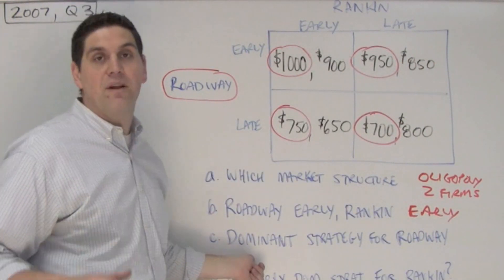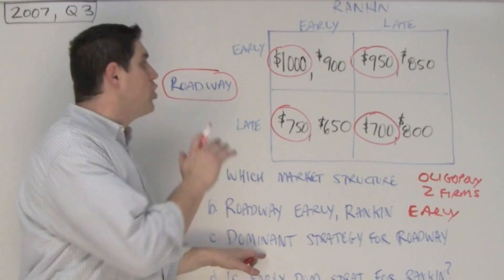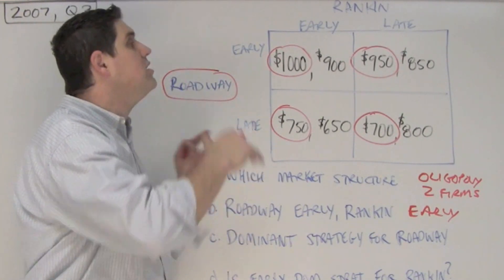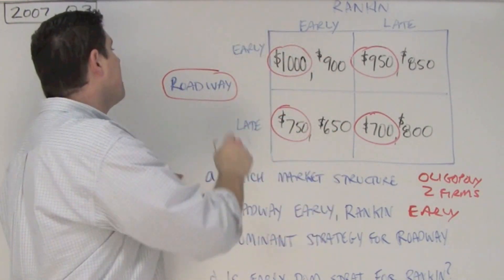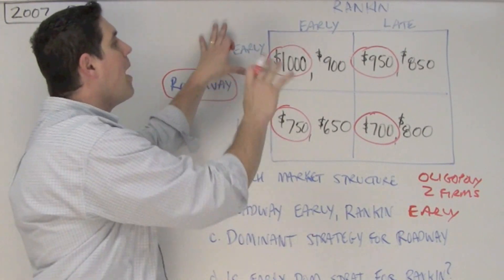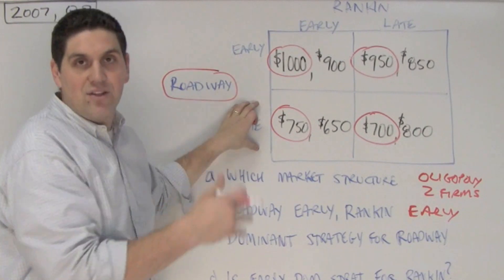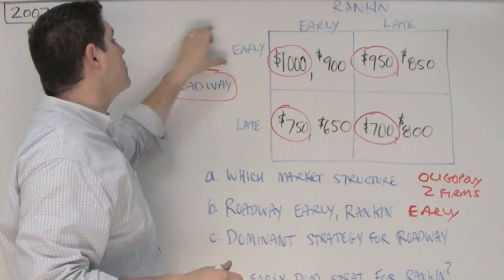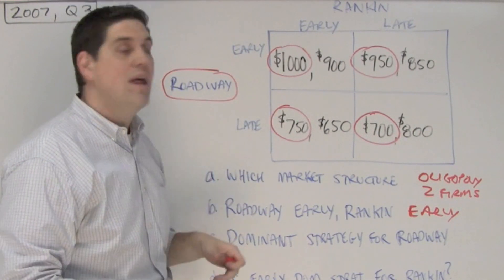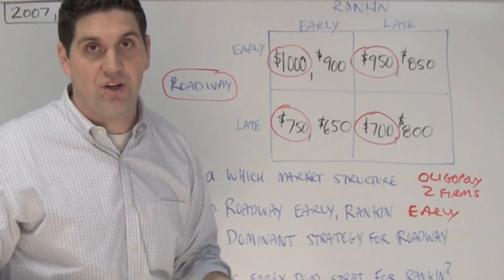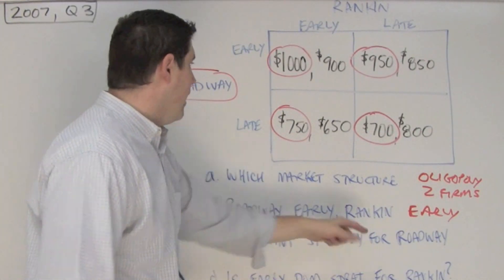In C, you have to understand the idea of dominant strategy. Dominant strategy is the choice the firm should pick regardless of what their opponents pick. So for example, if Roadway should always go early no matter what Rankin does, that means that's their dominant strategy. If they should go late regardless of what Rankin does, that's their dominant strategy. If sometimes they should go early, other times they should go late, then Roadway wouldn't have a dominant strategy.